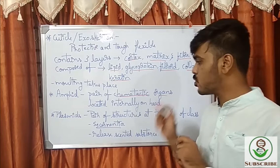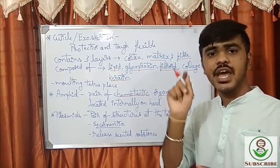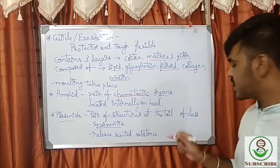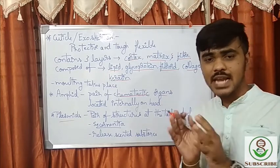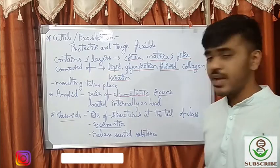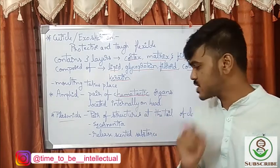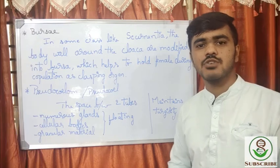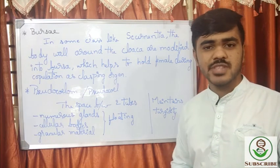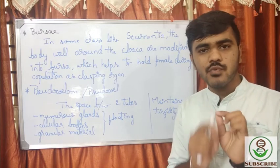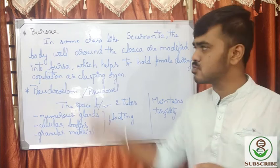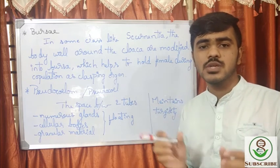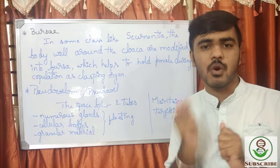The phasmid is a special structure present at the tail of only one class — Secernentea. This class is very special because they release a scented substance, which is also why the class is named Secernentea. In the same class, the body wall around the cloaca is modified into bursae. The bursae help males to hold the female as a clasping organ during copulation.